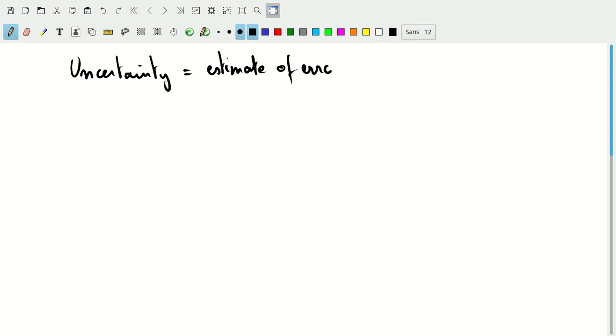The error is the difference between the true value minus the measured value. The sign itself is somewhat unimportant as long as you make sure you use the same sign.